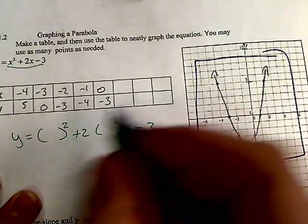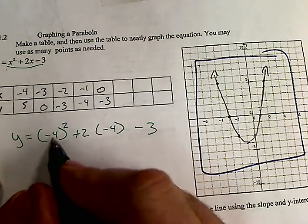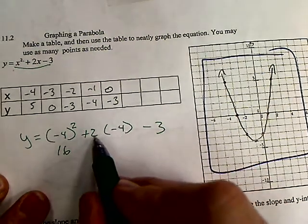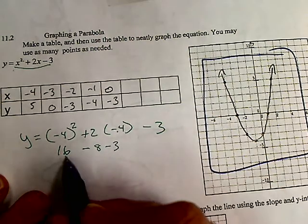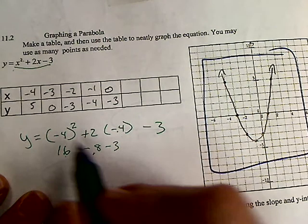I plug in negative 4. Negative 4 squared is a positive 16 because it's negative 4 times negative 4. Then I go 2 times negative 4 is negative 8, minus 3. 16 minus 11 is 5.